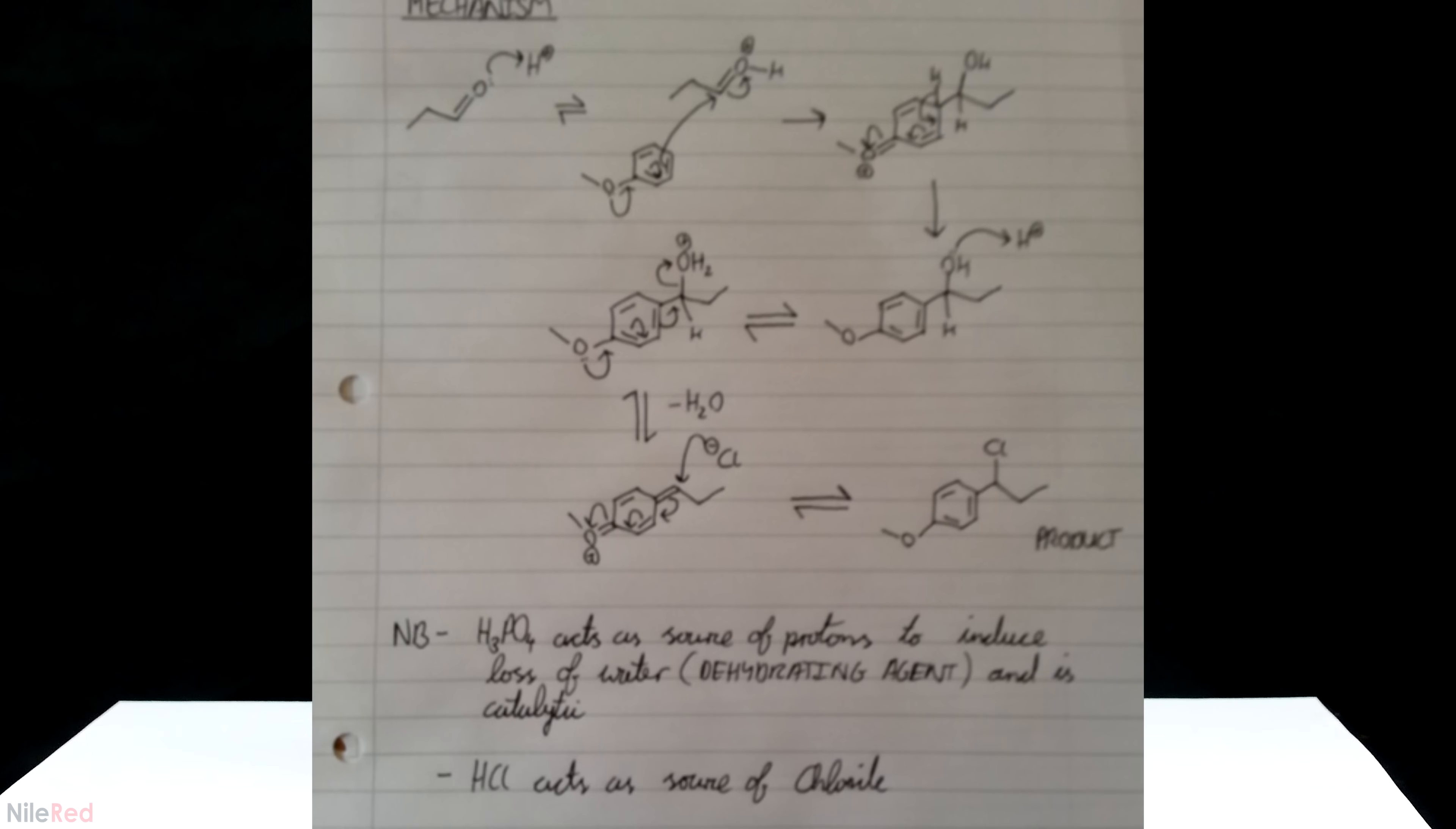And its electrons are donated back to the ring to regenerate aromaticity. The hydroxyl group that we form is then protonated under the acidic conditions. The methoxy group of the anisole again donates electrons to the ring, which results in the kicking of the water molecule.